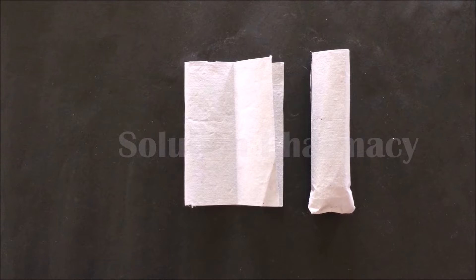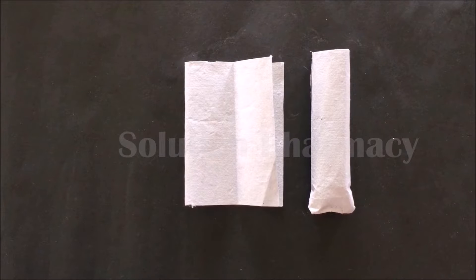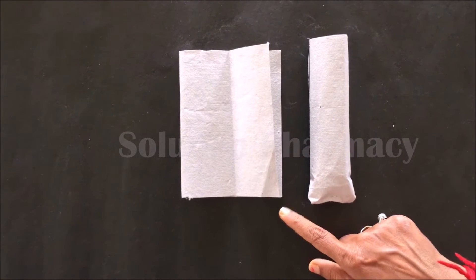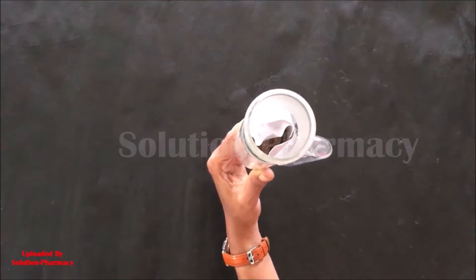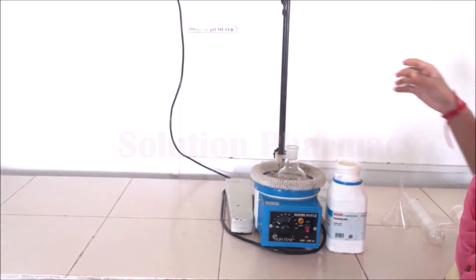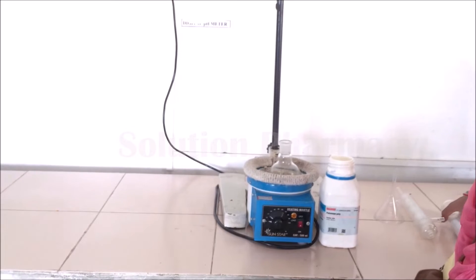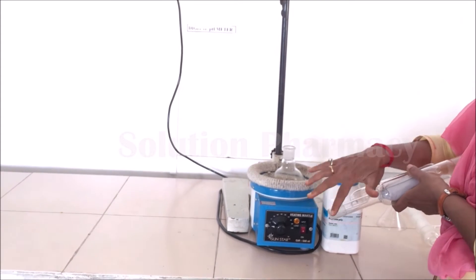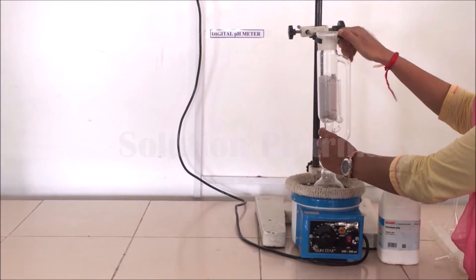For the extraction, first we have to prepare a thimble by using filter paper, muslin cloth, or ready-made thimbles available in the market made of cellulose. Here we have prepared the thimble using filter paper, and then transfer coarsely powdered crude drug into the thimble. After this, transfer it into the Soxhlet extractor, then keep the round-bottom flask in the heating mantle and add glass beads to avoid bumping — bumping means to prevent the solvent reverting back from the round-bottom flask to the Soxhlet extractor.